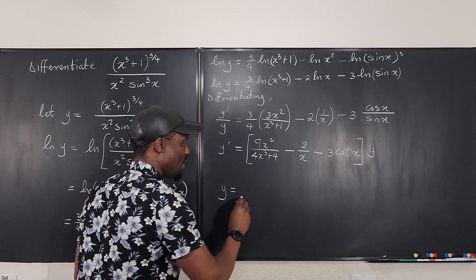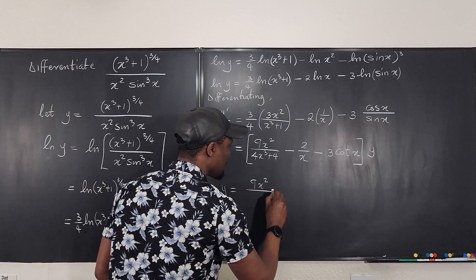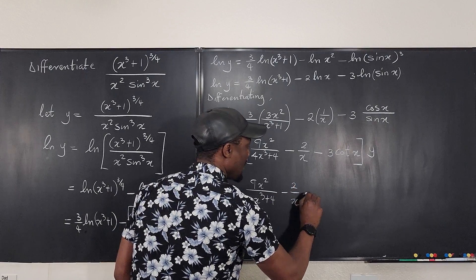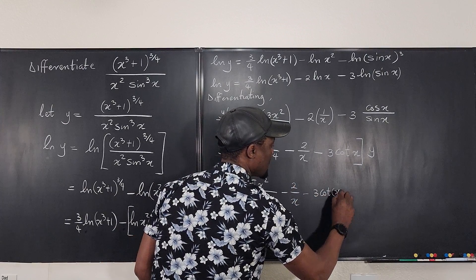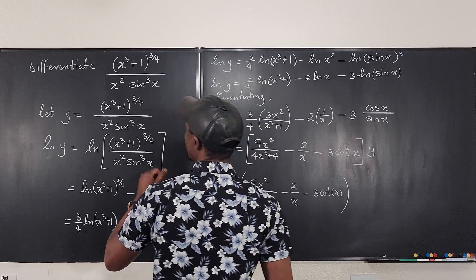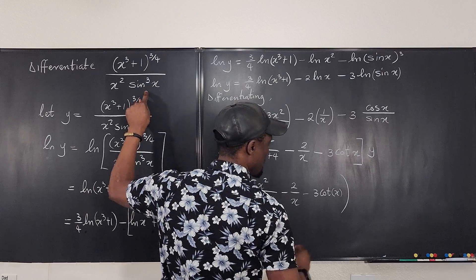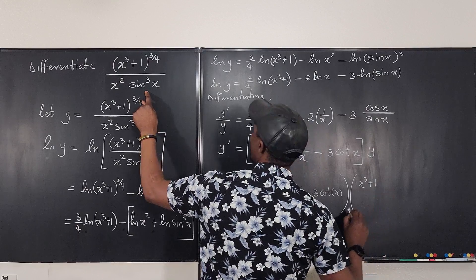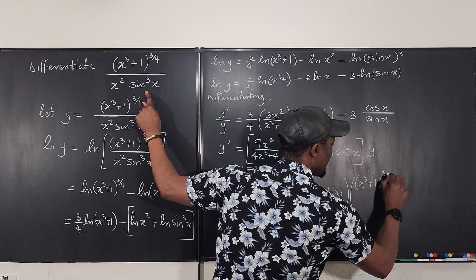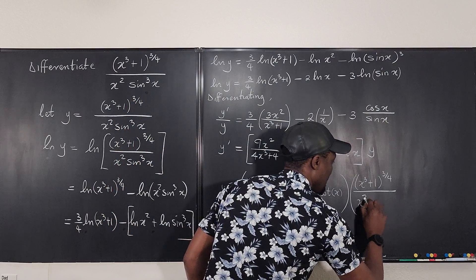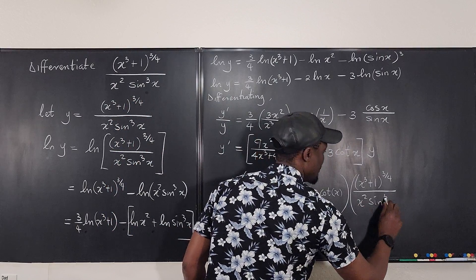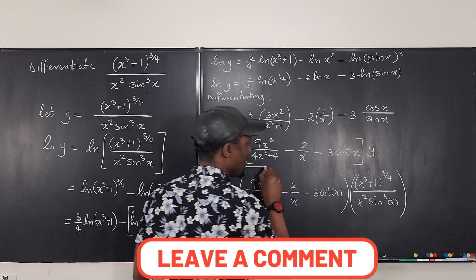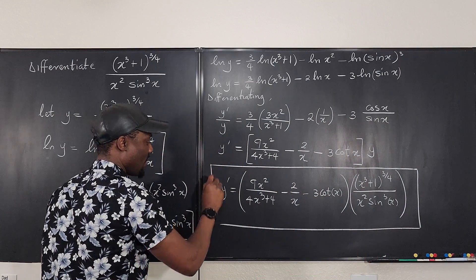So we have y prime ultimately will be 9x squared over 4x cubed plus 4 minus 2 over x minus 3 cotangent x multiplied by what is the y? This thing that we started with. x cubed plus 1 raised to 3 over 4 divided by x squared sine cubed x. And this is y prime. That is the derivative of the original function.